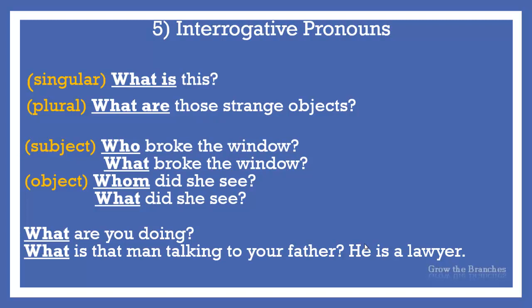What is generally used for things. It may be singular or plural, subject or object, and it has no possessive form. What is this? What are those strange objects? The distinction between who/whom for persons and what for things can be clearly seen in: Who broke the window? and What broke the window? Whom did she see? and What did she see? The answers could be George broke the window and a stone broke the window. Possible answers to the object questions might be: she saw George, she saw a ghost, or she saw a dream. What can also stand for an activity or profession: What are you doing? What is that man talking to your father? — He's a lawyer.